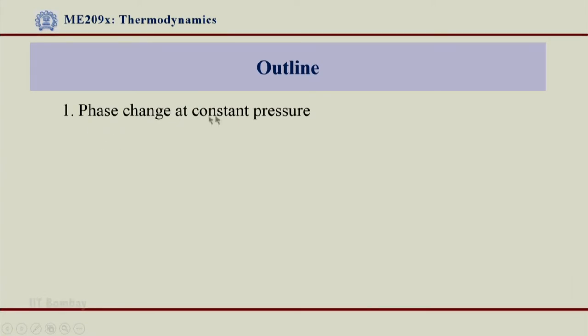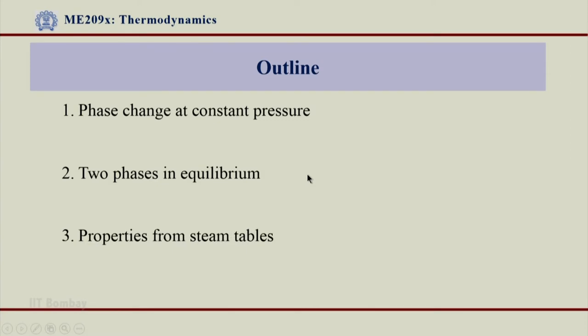Welcome back. Having seen both table 1 and table 2, and understanding the basic reference pressure and temperature with respect to these tables, let us now go ahead and see a phase change process at constant pressure. With this we will be able to see two phases in equilibrium — liquid and vapor — in equilibrium. Also, we will see how to read properties from the steam tables. What we had seen till now are only the first two columns from the steam table, but now let us look at different properties one can gather from the steam table.